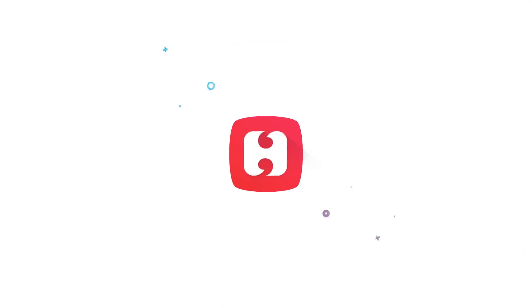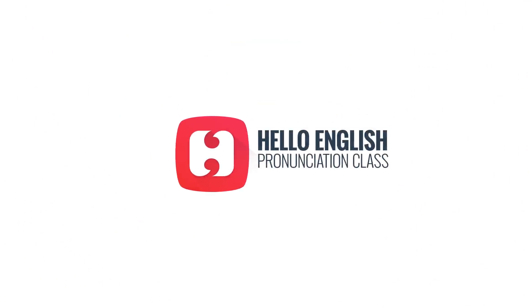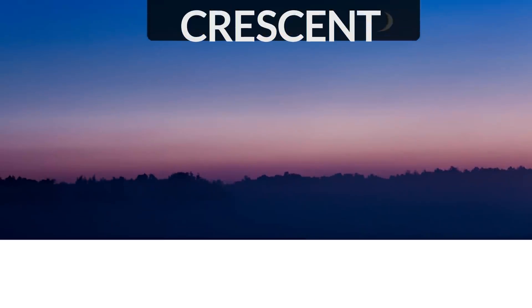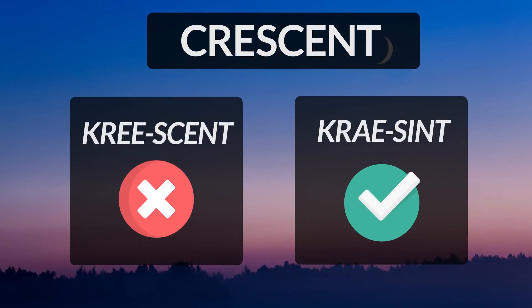Welcome to Hello English pronunciation class. Let's learn the pronunciation of the names of some shapes. The first word is crescent. Crescent is a curved shape that has two narrow pointed ends.